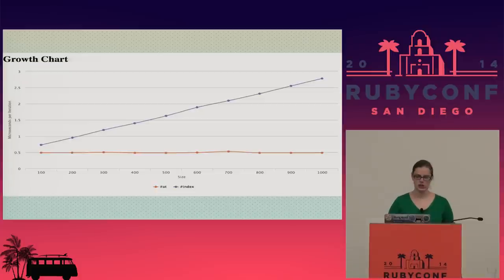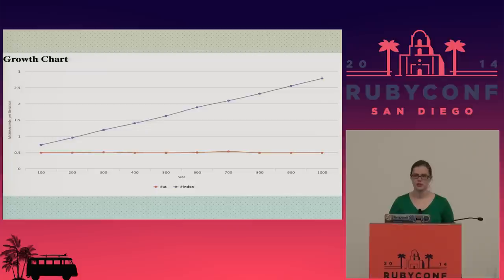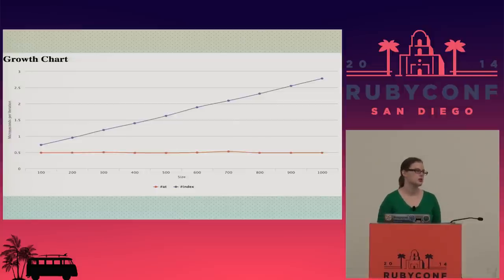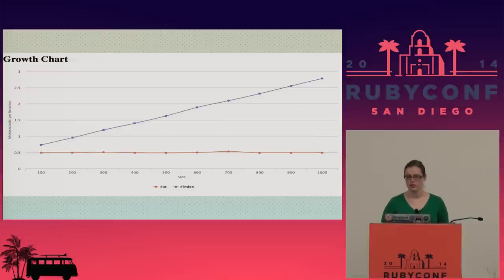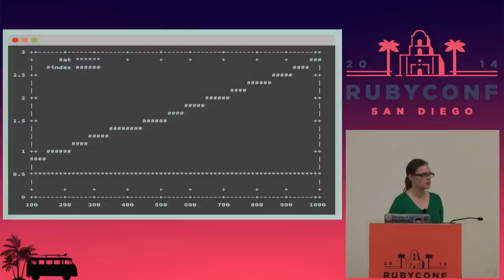Using ChartKick, here's an output of the difference in performance of `at` and `index` on array. Now it becomes really clear why there was a difference in performance when changing the array size. `At` is a constant performance method, while `index` grows linearly with the size of the array, which makes sense — `index` has to go in and find an object within the array, so as the array gets bigger, it takes more and more time. And just because it's cool, here's what the terminal ASCII chart output looks like — though that's just what GNUplot provides.